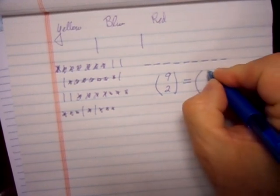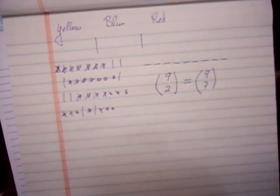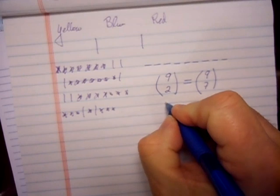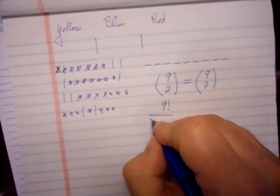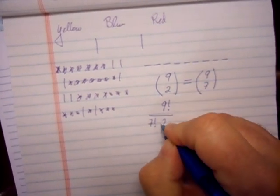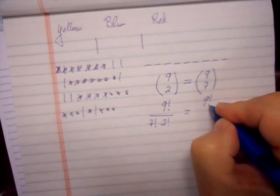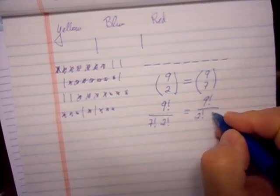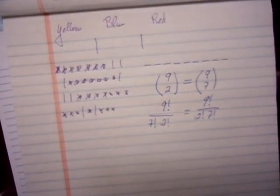Equivalently, out of the nine slots I need to pick seven of them to be stars. You can quickly verify that both of these are equal because the formula is 9! / (7! · 2!). In this case it would be 9! / (2! · 7!). So the stars and bars method is the way to do this.